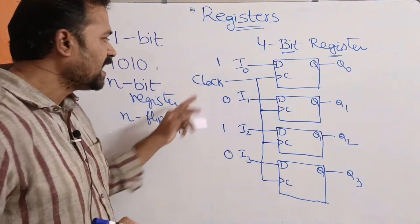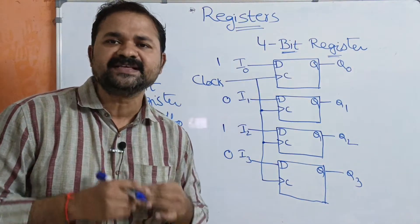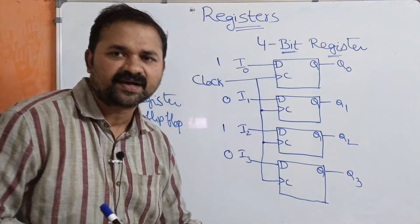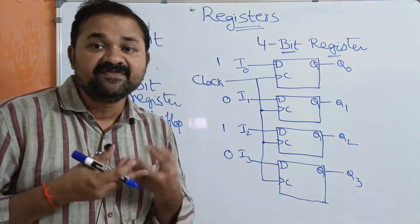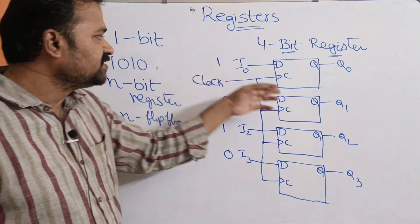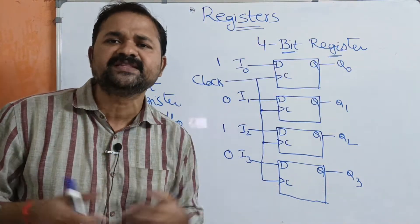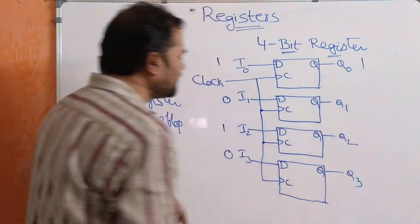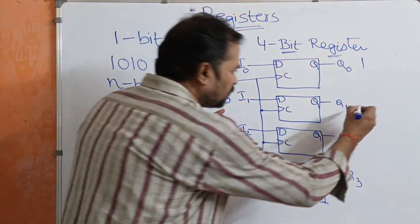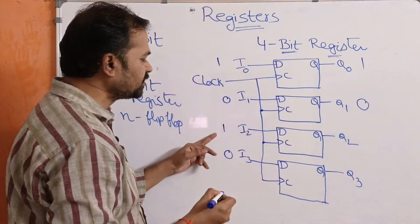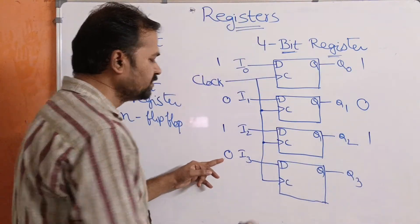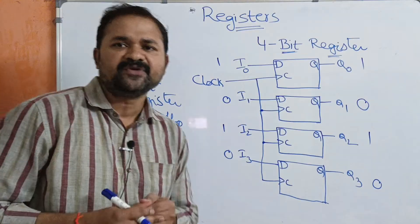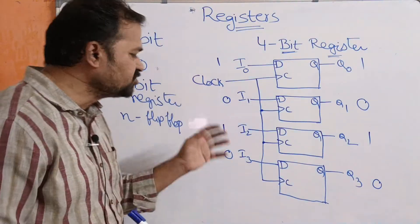Let us assume that the inputs are 1, 0, 1, 0 and the clock input is high. That means we have applied the clock pulse on the register. So we will get the output as: storing 1 gives output 1, storing 0 gives output 0, storing 1 gives output 1, and storing 0 gives output 0. So the output is 1, 0, 1, 0.